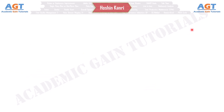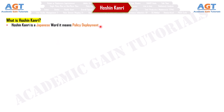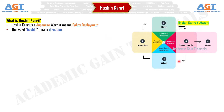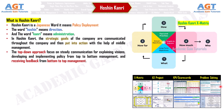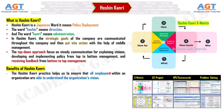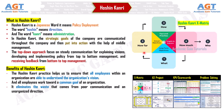Number 16: Hoshin Kanri. Hoshin Kanri is a Japanese word meaning policy deployment. 'Hoshin' means direction and 'Kanri' means administration. In Hoshin Kanri, the strategic goals of the company are communicated throughout the company and put into action with the help of middle management. The top-down approach focuses on steady communication for explaining visions, developing and implementing policy from top to bottom management, and receiving feedback from bottom to top management. Benefits: Hoshin Kanri ensures all employees understand the organization's vision, work toward a common goal, and eliminates waste from poor communication and unorganized direction.